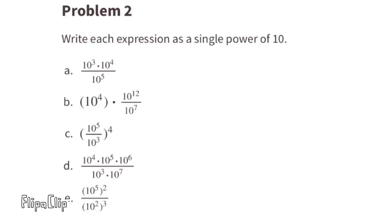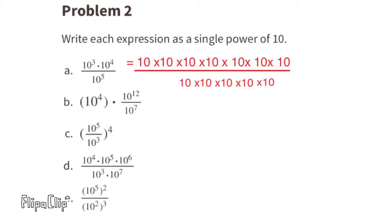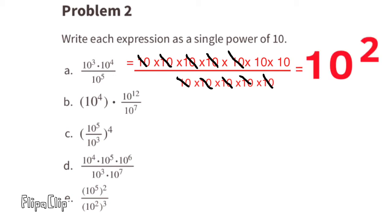Problem number 2: Write each expression as a single power of 10. A: 10 to the power of 3 times 10 to the power of 4 over 10 to the power of 5. That's the same as 10 times itself 7 times on top over 10 times itself 5 times on the bottom. All 5 on the bottom cancel out with 5 on top, leaving 10 times 10, which equals 10 to the power of 2.